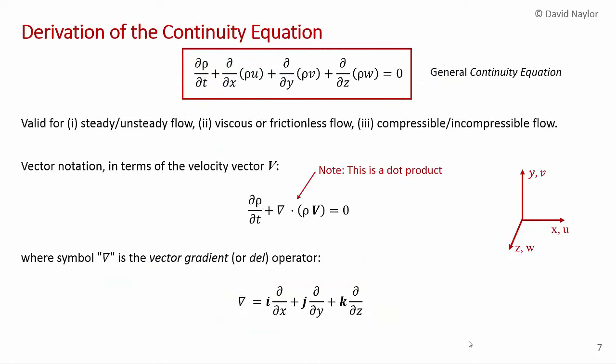The general continuity equation applies for both steady and unsteady flows — for steady flow, the time derivative term goes to zero. It's applicable for flows with or without viscosity (viscous or inviscid), and for compressible or incompressible flows. In the derivation, density has been left as a function of x, y, z, and time, so no simplifications have been made.